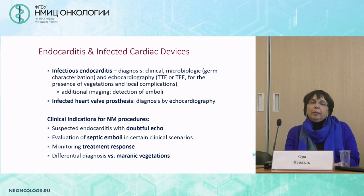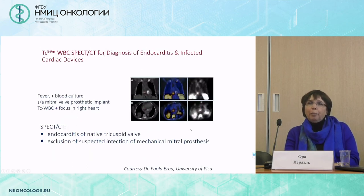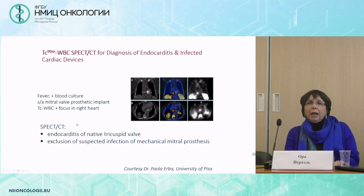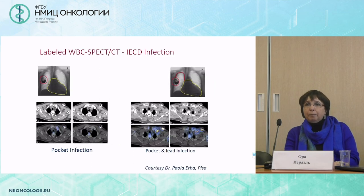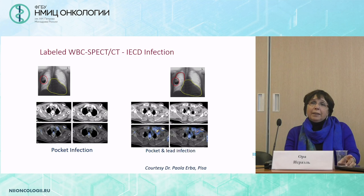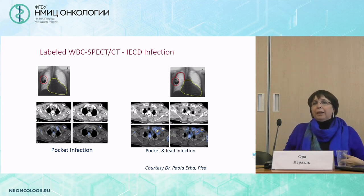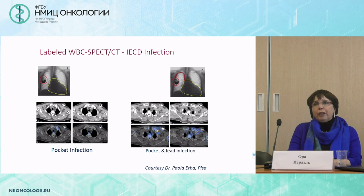Endocarditis is again an important indication — studies provided by Paola Erba from Pisa. A patient with a mitral valve prosthetic implant presented with fever and septicemia. On SPECT, there was an area of uptake in the right heart, and surprisingly it was endocarditis of the native tricuspid valve, not infection of the mitral valve prosthesis. In Pisa and in France, white blood cells SPECT-CT is used extensively for suspected infection of cardiac implants — by SPECT-CT one can not only make the diagnosis but also localize the infection to the pocket or the lead of the device.